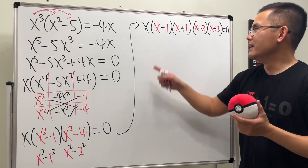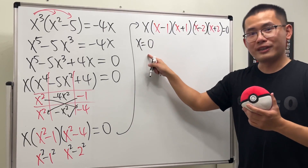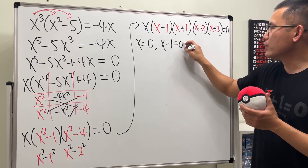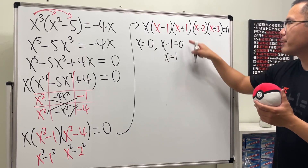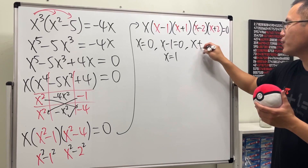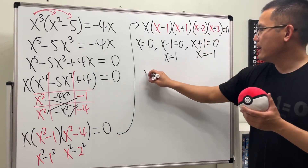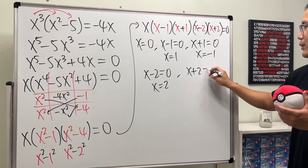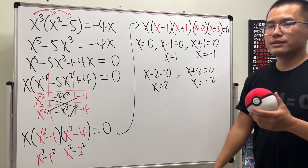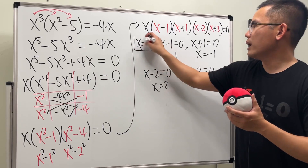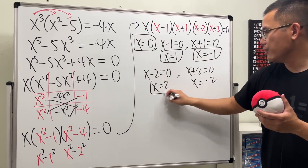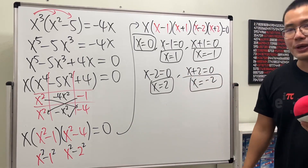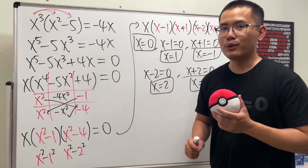Now we just set each factor equal to zero and solve. From x: x equals 0. From x minus 1 equals 0: x equals 1. From x plus 1 equals 0: x equals negative 1. From x minus 2 equals 0: x equals 2. From x plus 2 equals 0: x equals negative 2. So we have a total of five answers: 0, 1, negative 1, 2, and negative 2. That's how you do this one — it's not so bad!